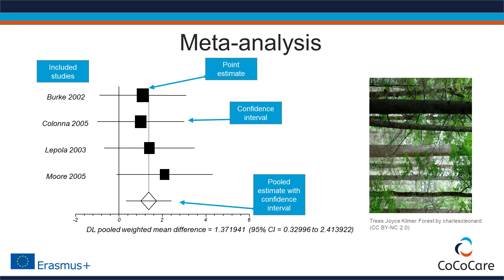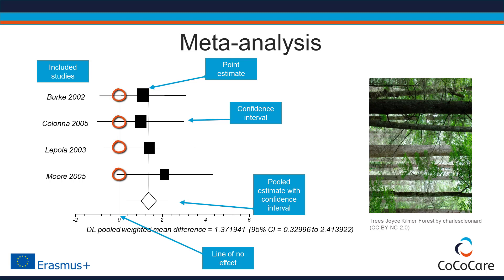The forest plot also highlights one of the strengths of meta-analyses: an increase in power and precision. The line here depicts the threshold of no effect. As you can see, the confidence intervals of all four individual studies cross this line, meaning that all four studies do not have statistically significant findings. Pooling the four studies, however, renders statistically significant results — the confidence interval of the pooled estimate does not cross the line of no effect.